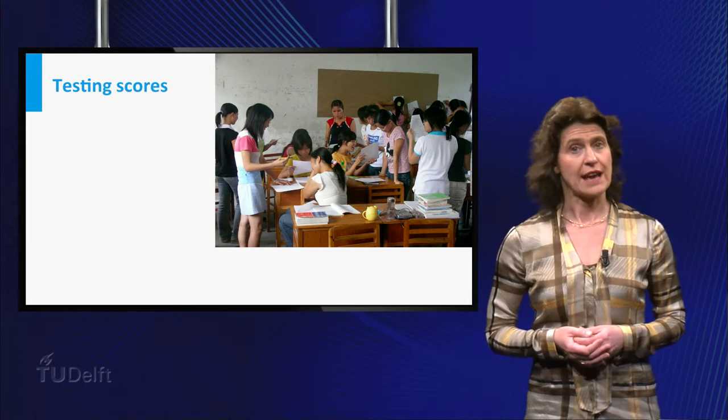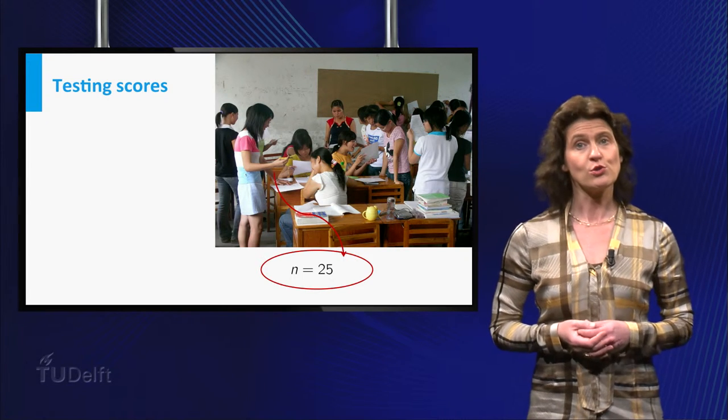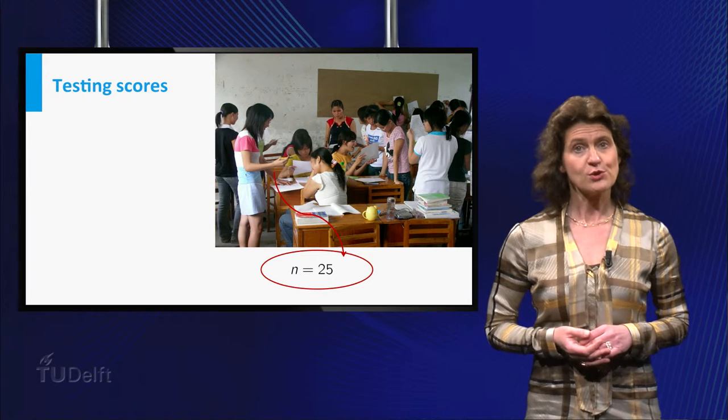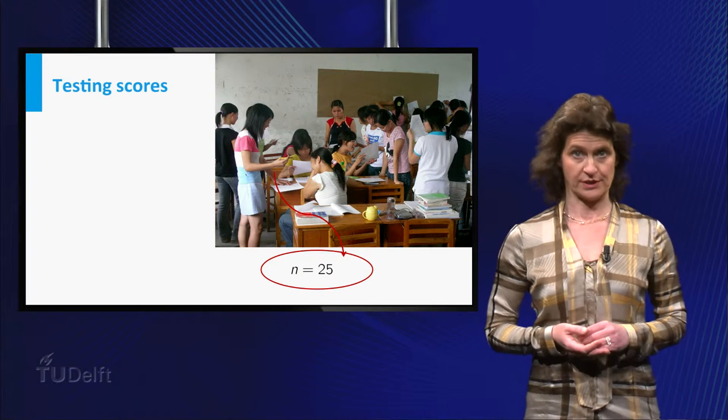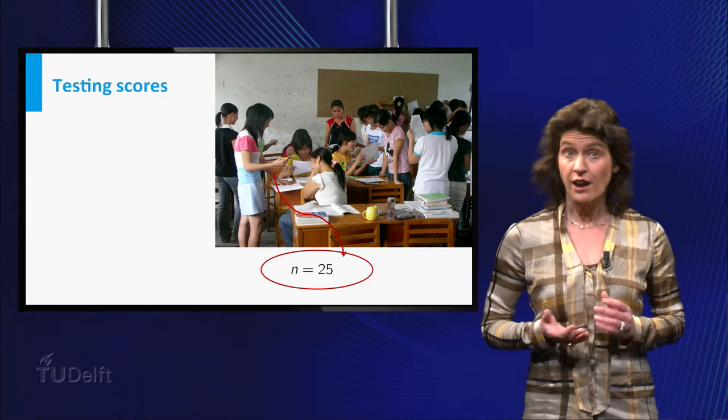So let's go back to our example of school kids doing an arithmetic test. Suppose you choose 25 children at random and suppose that their average score on the test turns out to be 56 points. Is it a coincidence that the score is below the national mean score or not?